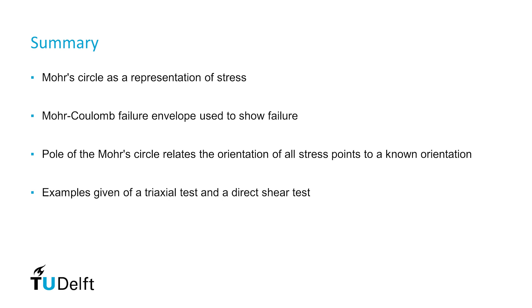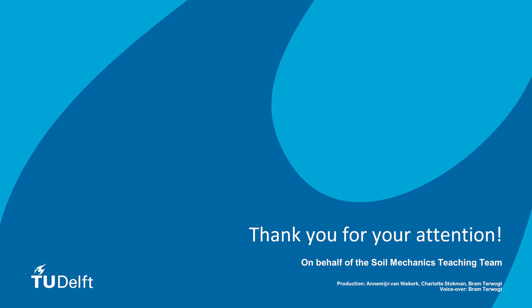A short summary: the Mohr circle can be seen as a representation of stress. The Mohr-Coulomb failure envelope was used to show failure. The pole of the Mohr circle relates the orientation of all stress points to a known orientation. The examples of a triaxial test and a direct shear test were explained. Thank you for your attention and on behalf of the soil mechanics teaching assistants — good luck with your studies!